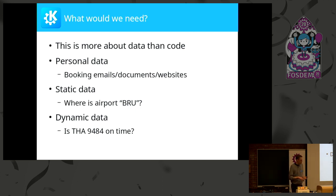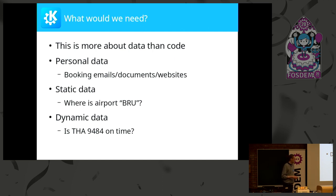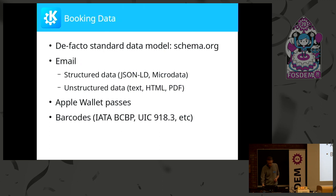The third category is what I would call dynamic data — delay information, gate changes — extremely short-lived information that you need to query from some online service. So let's look at those three categories in a bit more detail.